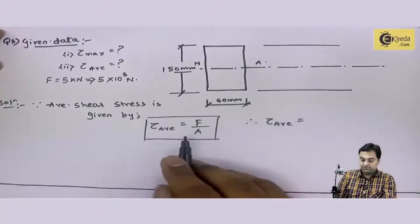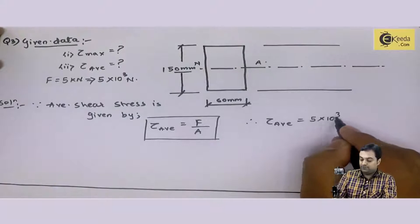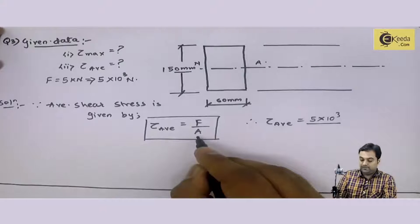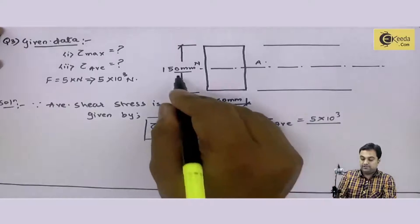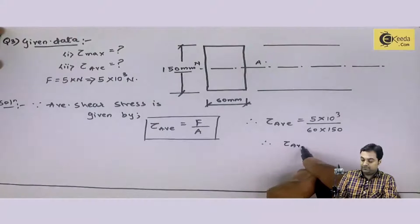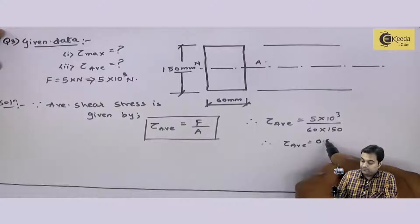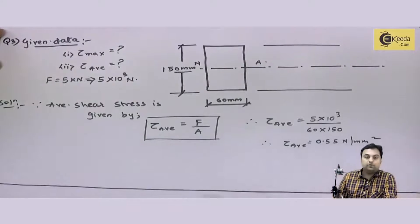Therefore tau average is equal to shear force 5 kilo Newton, so 5 into 10 to the power 3 Newton, divided by area. Area is 60 into 150. Therefore tau average comes out to be 0.55 Newton per mm square.